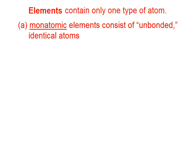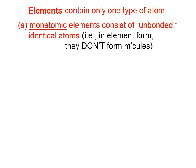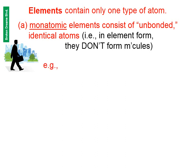Elements contain only one type of atom. Monatomic elements consist of unbonded, identical atoms. That is, when they're in their element form, they don't form molecules. We can think of monatomic elements as walking alone down the boulevard of broken dreams. Some examples of monatomic elements are iron, aluminum, copper, helium. Most of the elements on the periodic table we consider to be monatomic elements.